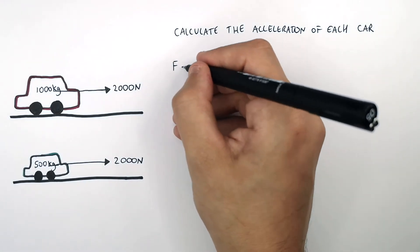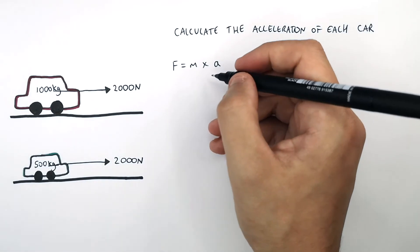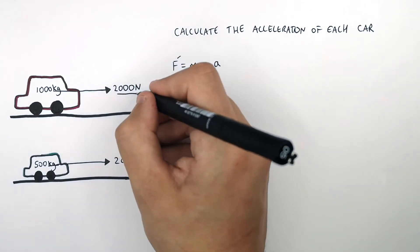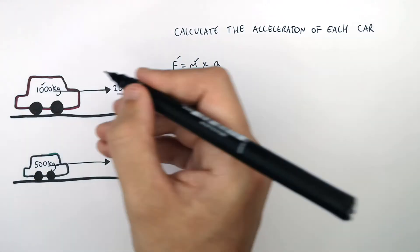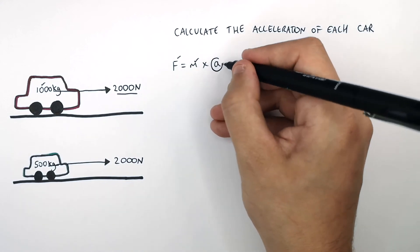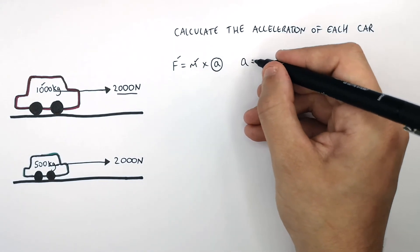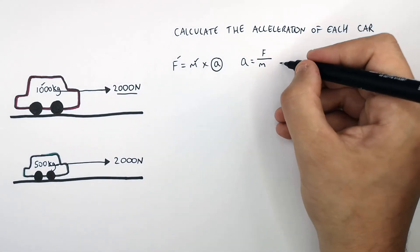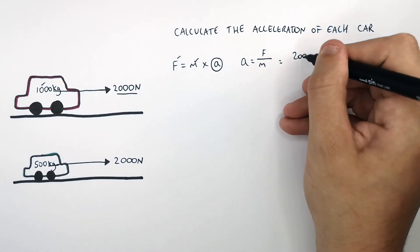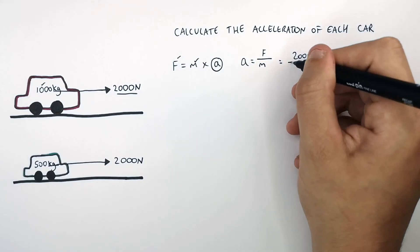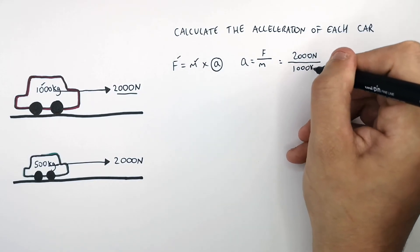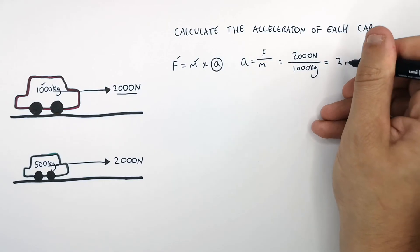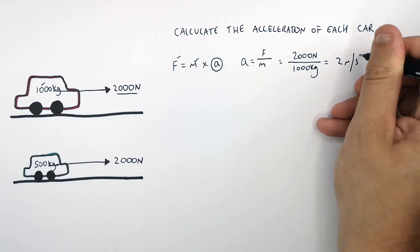We want to calculate the acceleration of both cars. Recalling the equation F equals M times A with the forward resultant force of 2000 newtons and the mass of 1000 kilograms, rearranging for A gives acceleration equals force divided by mass. Substituting: 2000 newtons divided by 1000 kilograms gives an acceleration in a forward direction of 2 meters per second squared.